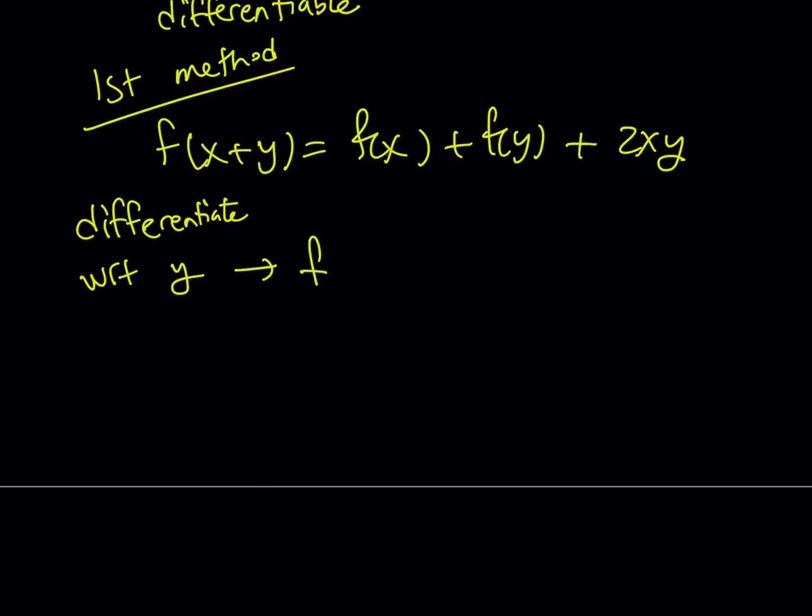So you're going to get the following: f'(x+y), because the derivative of y with respect to y is 1, equals, now the derivative of f(x), since x is a constant, f(x) is a constant, and it's going to be 0. The derivative of f(y) is going to be f', and the derivative of 2x multiplied by y, 2x is a constant, so it's just going to be 2x.